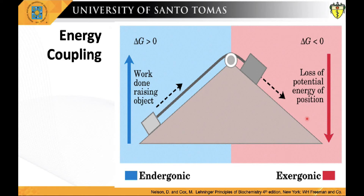The object tends to slide down the plane, losing its potential energy of position as it approaches the ground. When an appropriate string and pulley device couples the falling object to another, smaller object, the spontaneous downward motion of the larger can lift the smaller, accomplishing a certain amount of work. The amount of energy available to do work is the free energy change, or delta G — always somewhat less than the theoretical amount of energy released because some energy is dissipated as heat of friction. The greater the elevation of the larger object, the greater the energy released, or delta G, and the greater the work that can be accomplished.